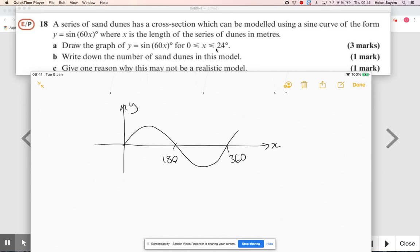So if that's being squashed in by a scale factor of 1 over 60, basically I'm going to do 180 divided by 60, that intercept will become 3 and that intercept will become 6.